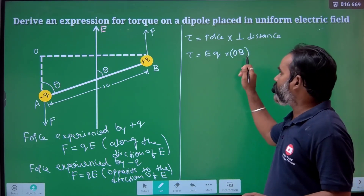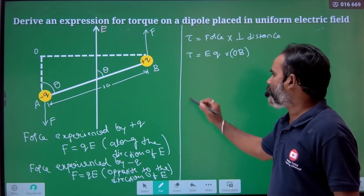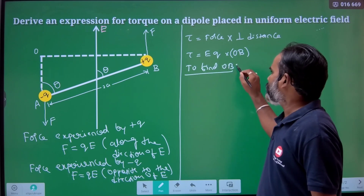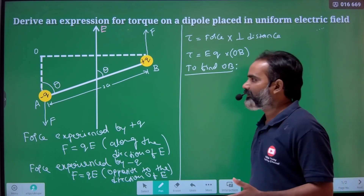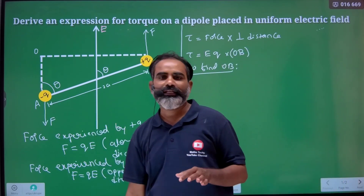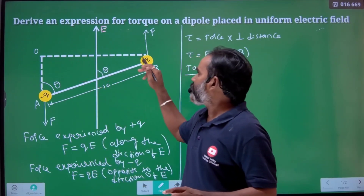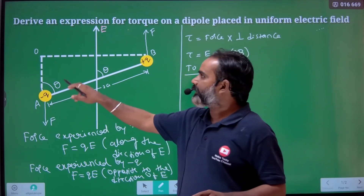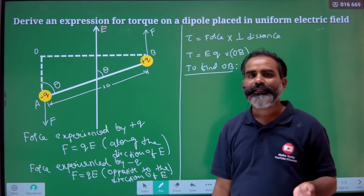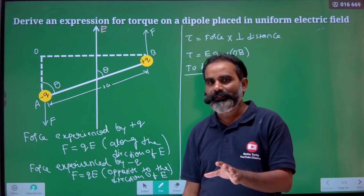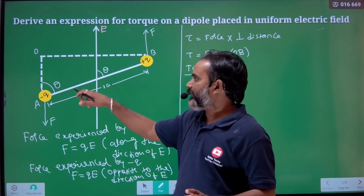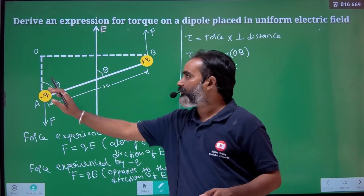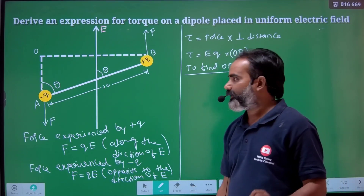The perpendicular distance OB — I know the value of q, I know the value of E, but I need to find OB. To find that perpendicular distance OB, I use trigonometry. Let theta be the reference angle. In the triangle AOB, sin theta equals opposite over hypotenuse.